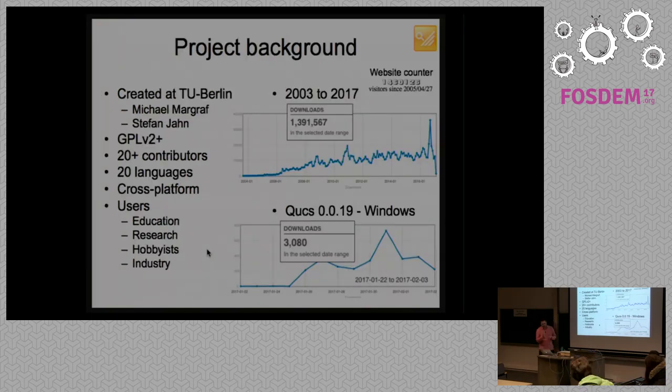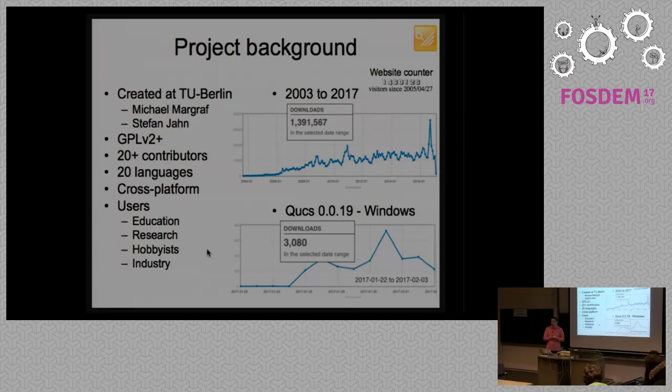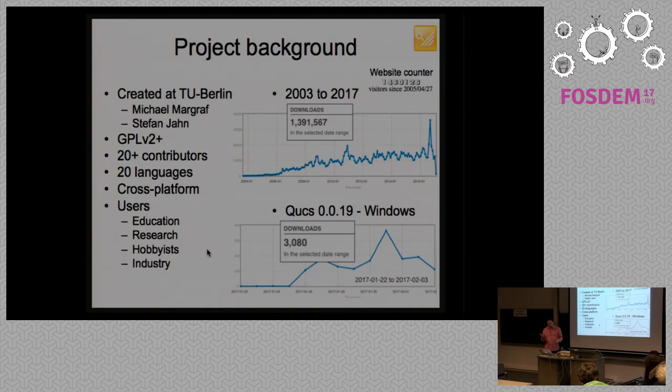The project started in 2003. It was created in TU Berlin by Michael Magrath and Stefan Jan. The first one created the user interface, the second one created the solver or the engine. It was from the beginning GPL 2+. To date, it has more than 20 contributors. It's translated into about 20 languages. It's cross-platform and the user base is varied, from education, from researchers, hobbyists and even the industry.